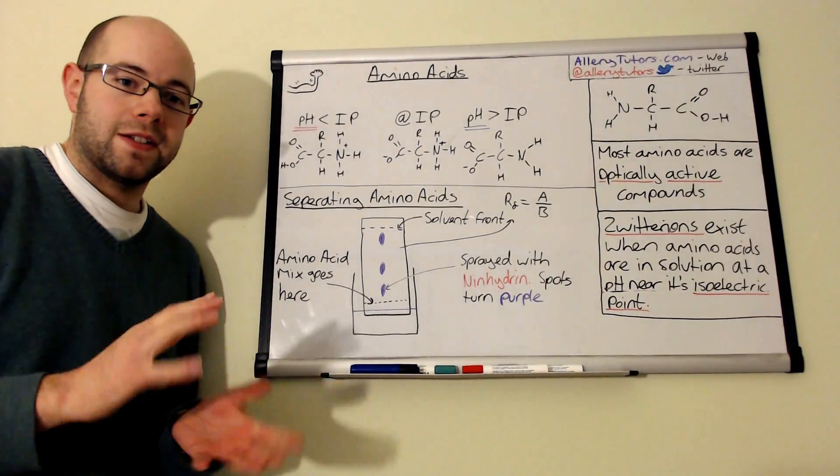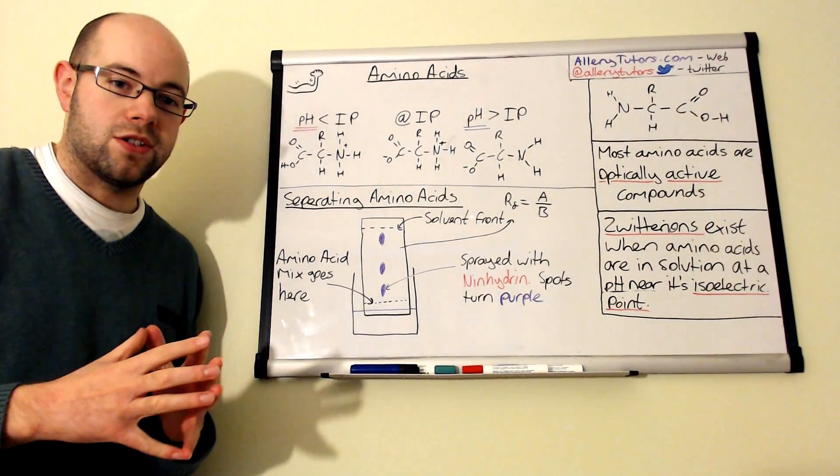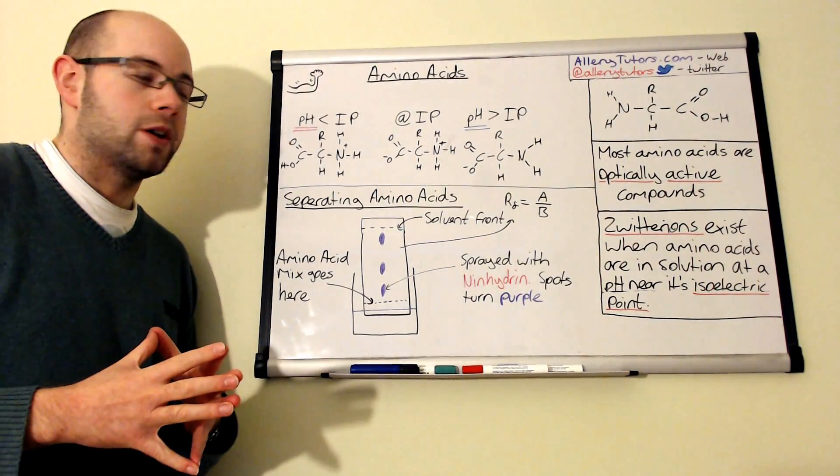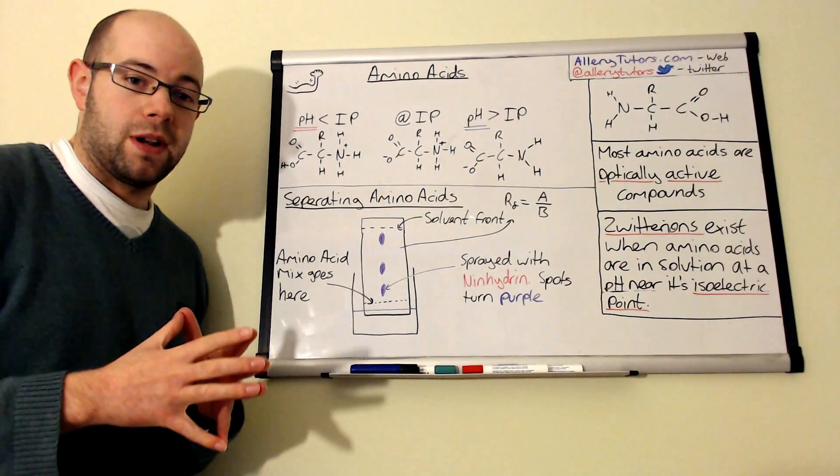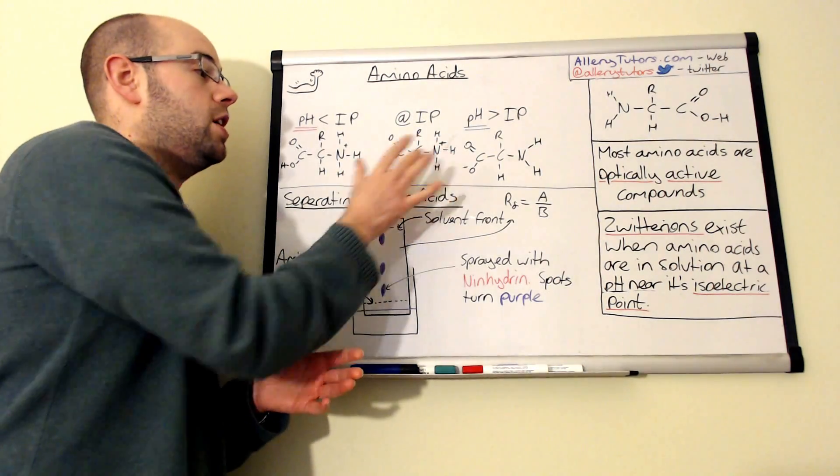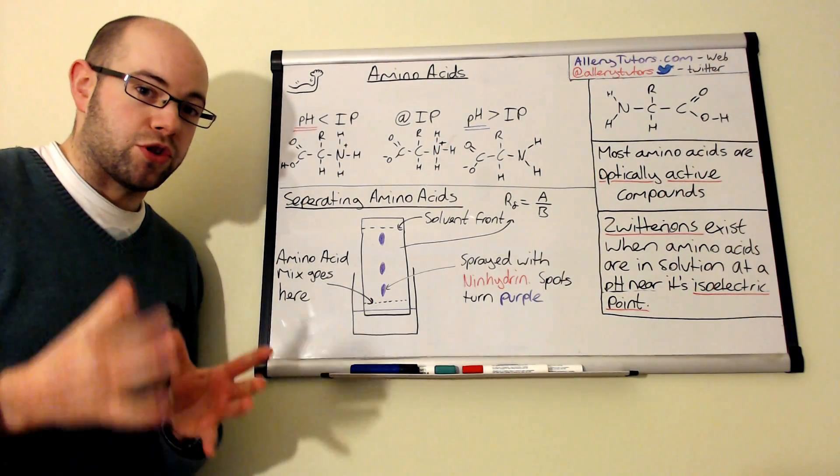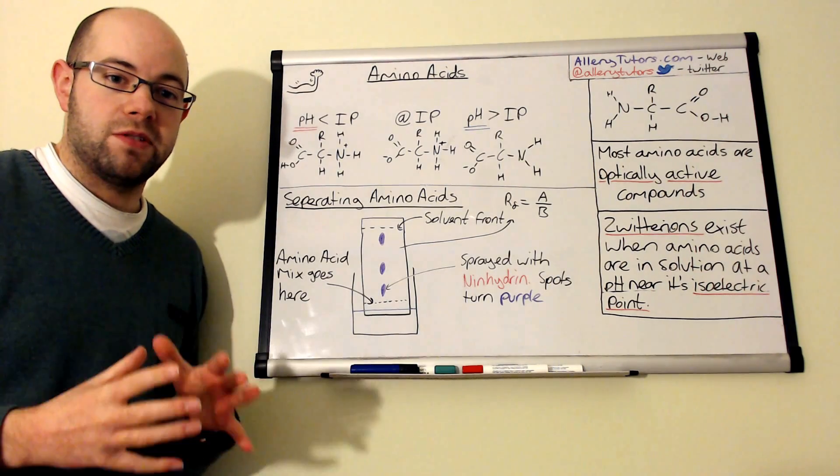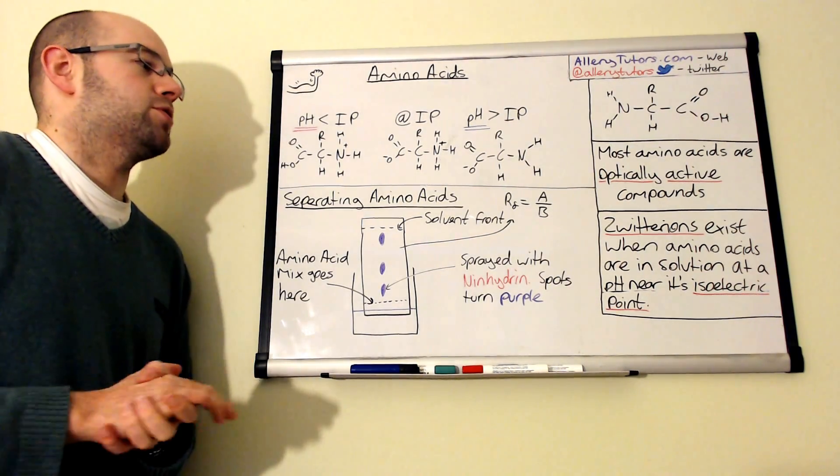So amino acids are quite versatile. They can change in terms of the charges that they have. But you do need to know that at the isoelectric point, you generally form a zwitterion, and the majority of the molecules have zero charge. So they're uncharged.